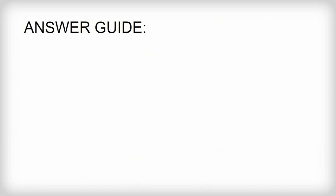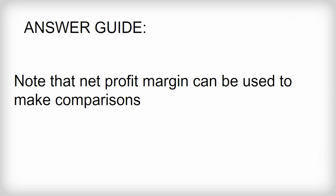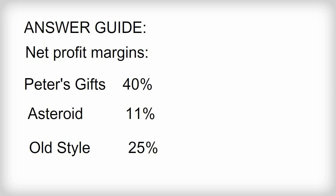Here is the answer. One reason for calculating net profit margin is to compare the performance of a business with other businesses. You might think that all three companies are doing equally well, but that ignores the net profit margin. Peter's Gifts has a much higher net profit margin than the other two companies on a smaller sales revenue. The net profit margins for each business are: Peter's Gifts 40%, Asteroid 11%, and Old Style 25%.